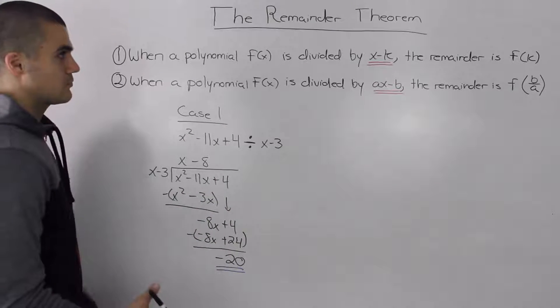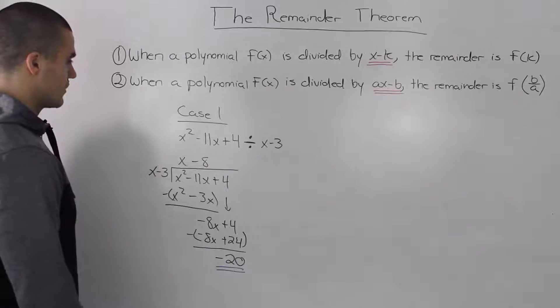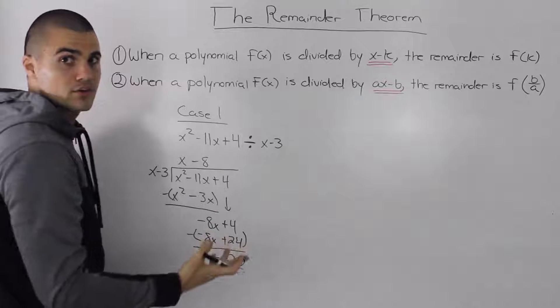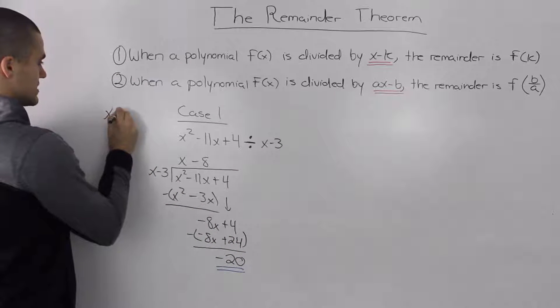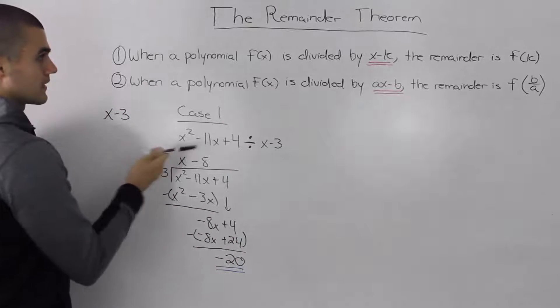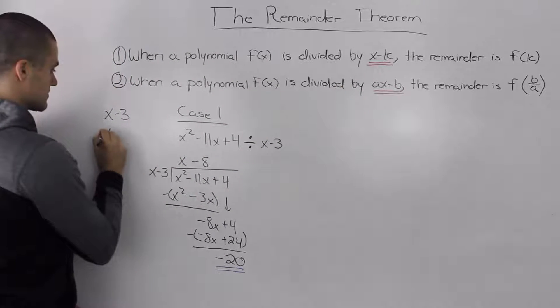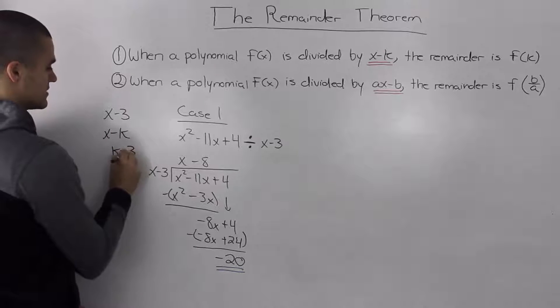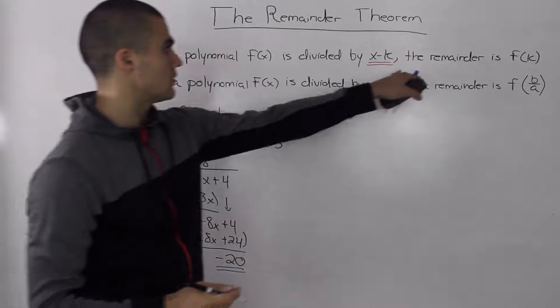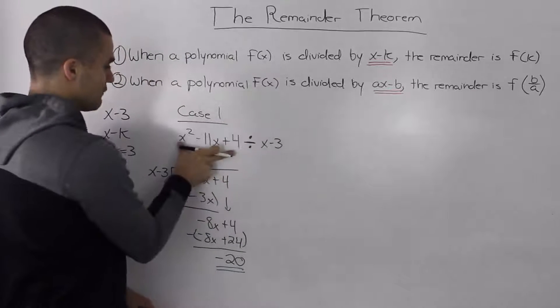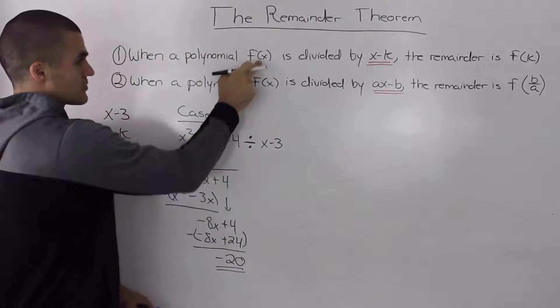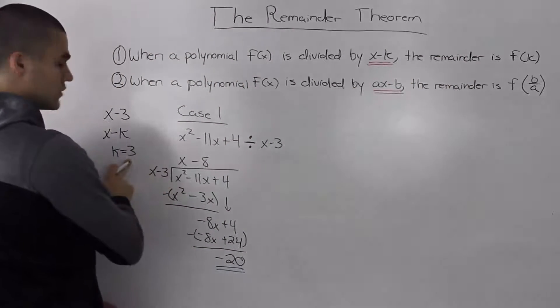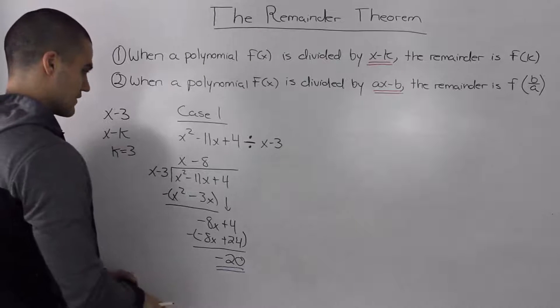This way we already know how to do. We got a remainder of negative 20. Now what if we took the same example and we use the remainder theorem? Well first off, we have to figure out which case we're going to use. And that all depends on our divisor. So in this case, our divisor is x minus 3. And it follows the x minus k form. So our k value in this case is 3. So to find the remainder, if we're dividing a polynomial f(x), to find the remainder, we can just plug in f of the k value, which is 3 in our case.